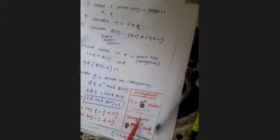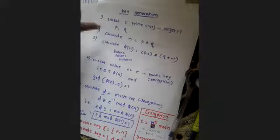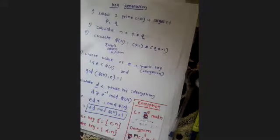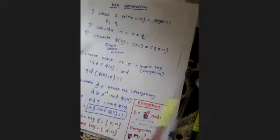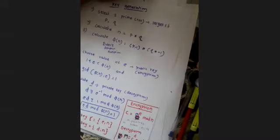So encryption: C = M^E mod N. Decryption: M = C^D mod N. We will solve two numerical examples in the next session so the algorithm will be clear. Mark-worthy questions will be asked on this. We will stop here for today.